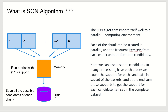The candidates are dispensed to many processors. For each processor, the support for each candidate is counted in the subset of baskets, and at the end those sub-supports are summed. The total support for each candidate in the item set is then computed.